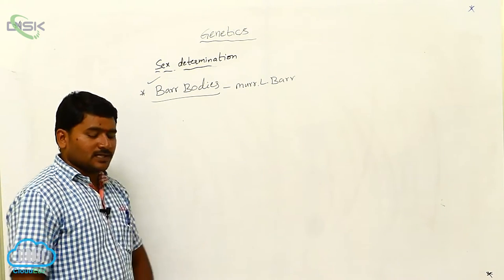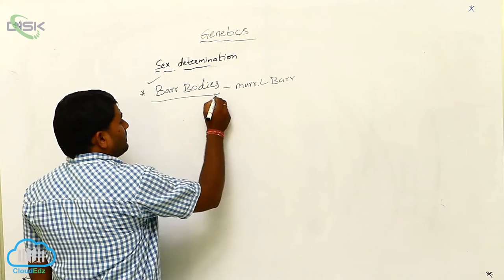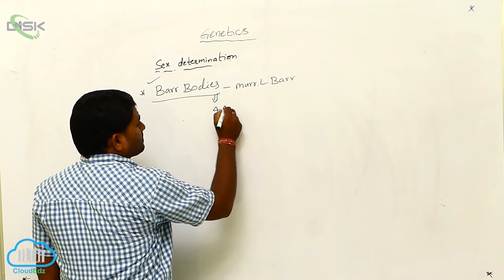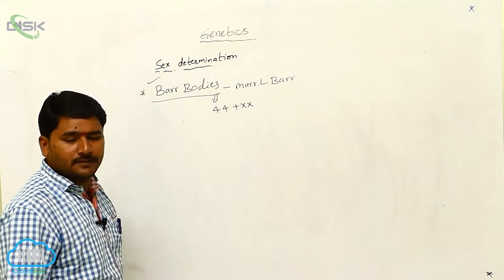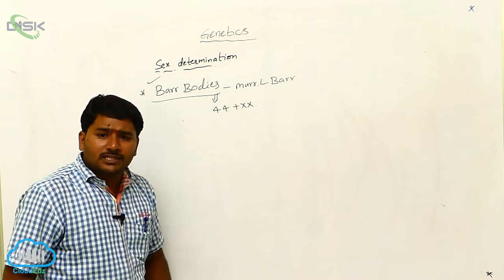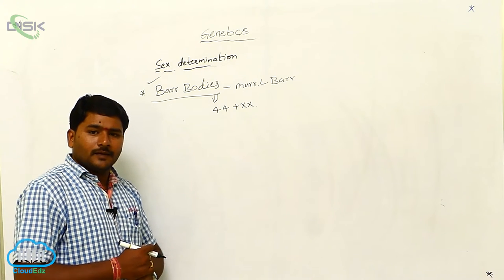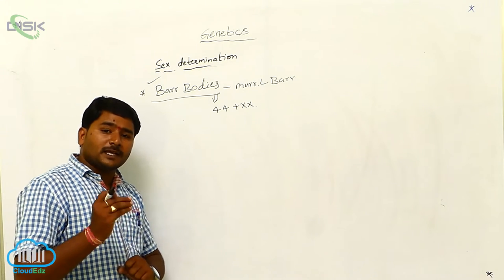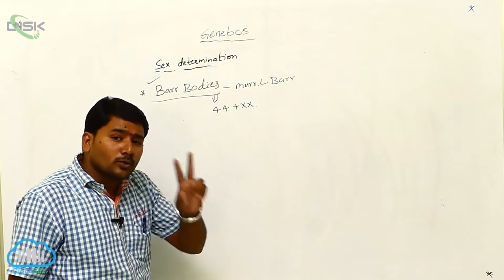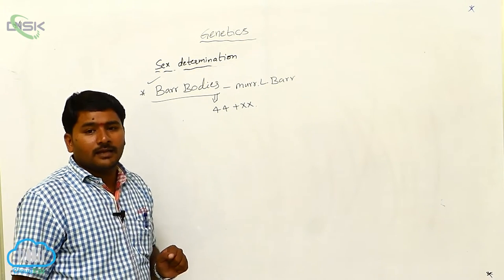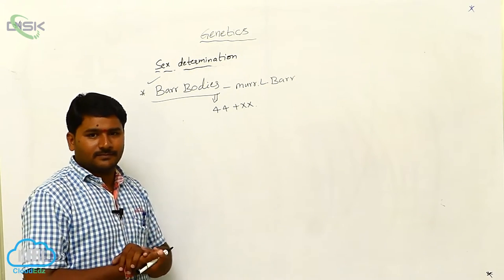What are bar bodies? Generally, in females, how many X chromosomes are present in human beings? Two X chromosomes are present. The genes responsible for femaleness are present on the X chromosome, and when two X chromosomes are there, it increases the dosage of the characters.